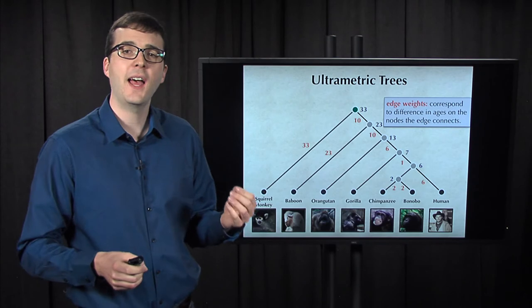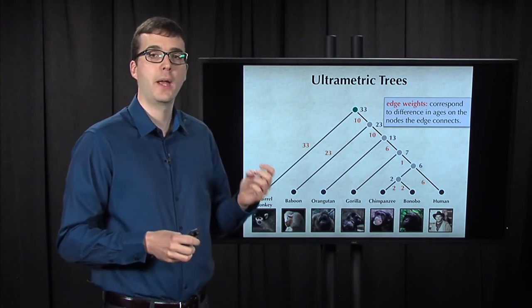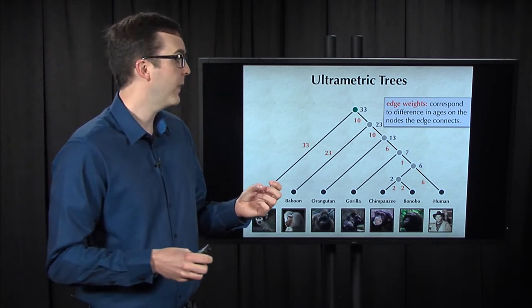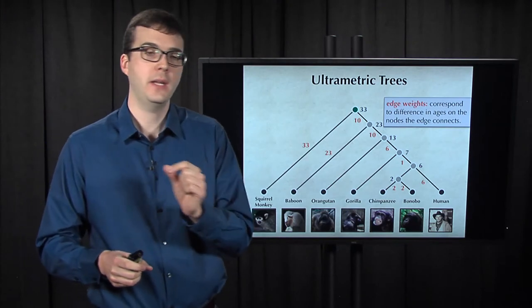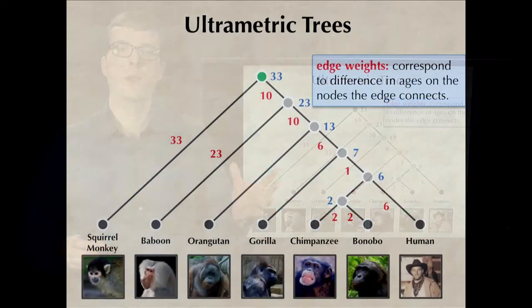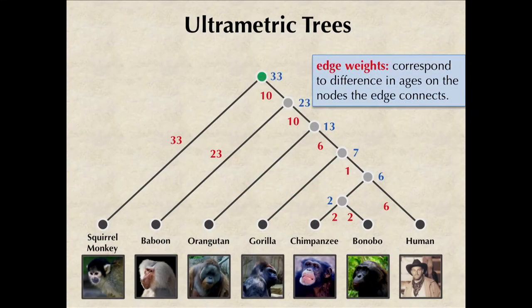Once we assign ages to the nodes of a rooted binary tree, we get the weight of the edges of this tree, here shown in red, simply by taking the difference between the ages. So for example, the age of this node is 33, the age of that node is 23, we get the edge weight 10 for free just by subtracting the two ages.